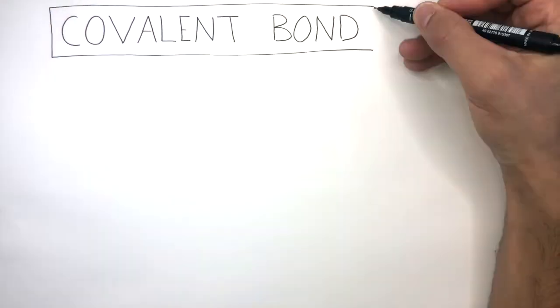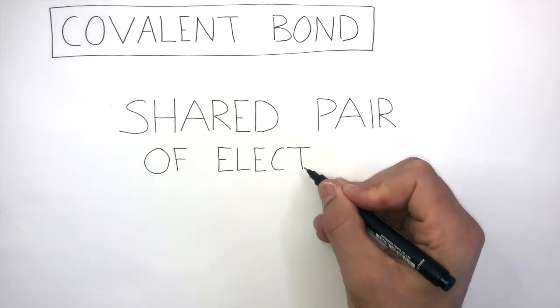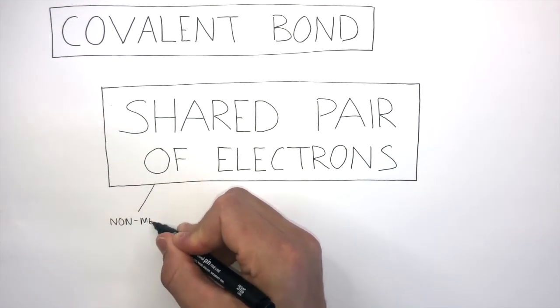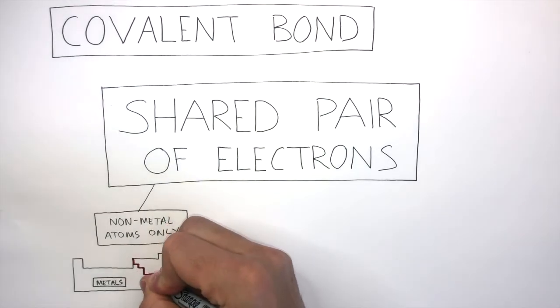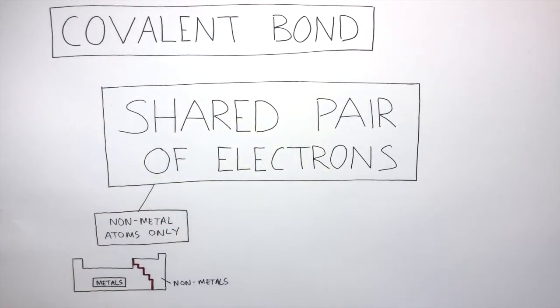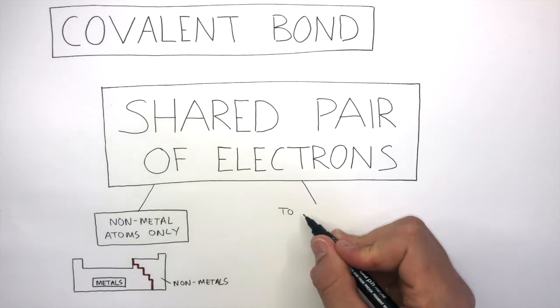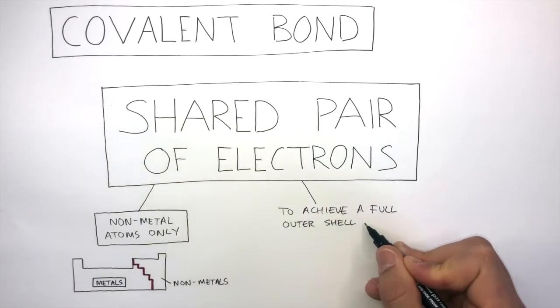The definition you need to learn for a covalent bond is the shared pair of electrons. This is between non-metal atoms only found to the right of the stepped line in the periodic table and this is done to achieve a full outer shell of electrons.